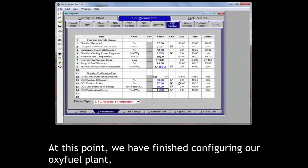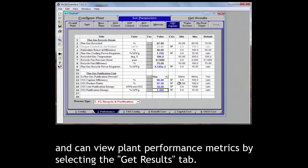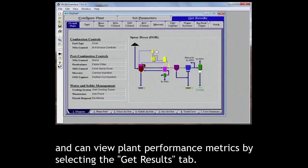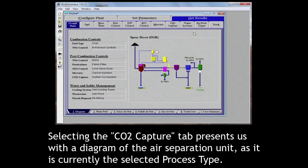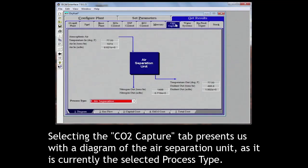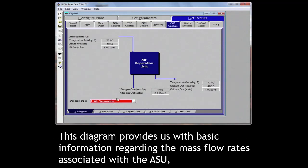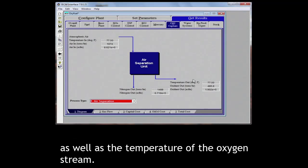At this point, we have finished configuring our oxyfuel plant and can view plant performance metrics by selecting the get results tab. Selecting the CO2 capture tab presents us with a diagram of the air separation unit as it is currently the selected process type. This diagram provides us with basic information regarding the mass flow rates associated with the ASU as well as the temperature of the oxygen stream.